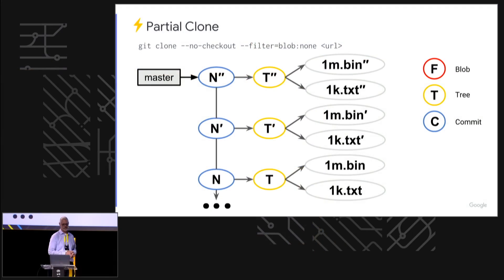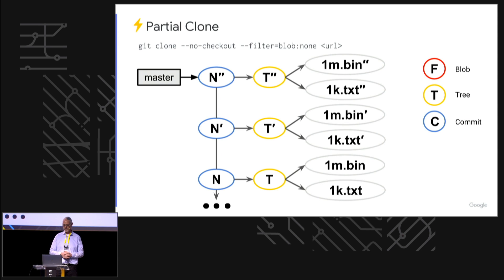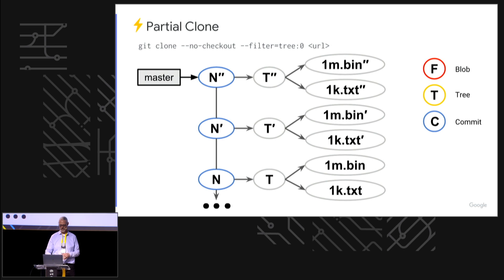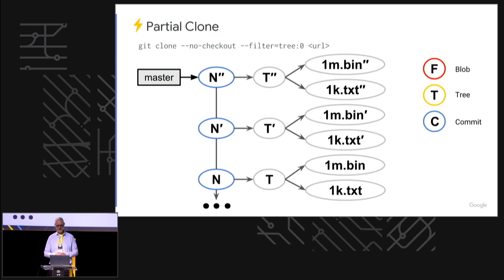Here's a second command: git clone with --no-checkout. The no-checkout stops that second phase, so it just fetches into the .git directory. In this case we said filter=blob:none — we're downloading all the commits and all the trees but none of the file contents. And here's a further checkout with a newer feature available in 2.20: filter=tree:0, which means not checking out any of the trees, only the commits.